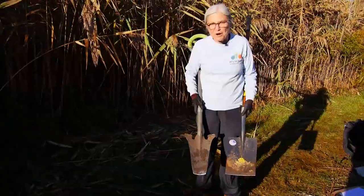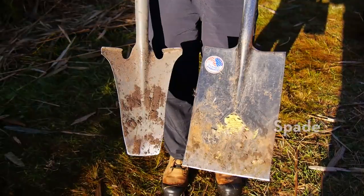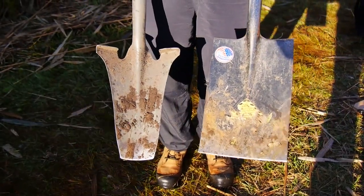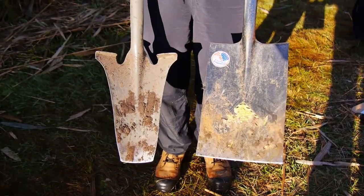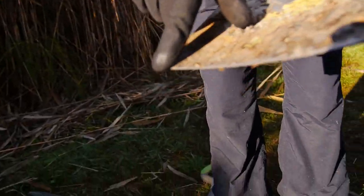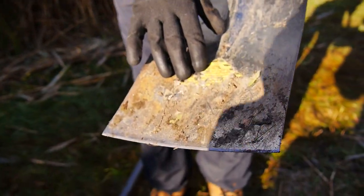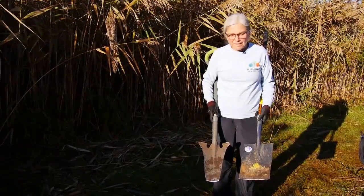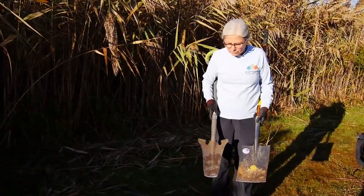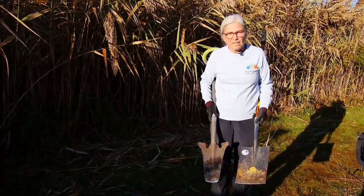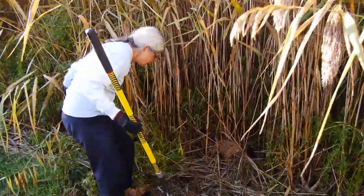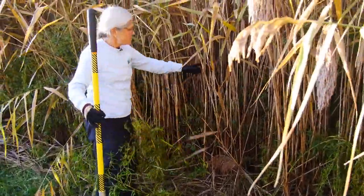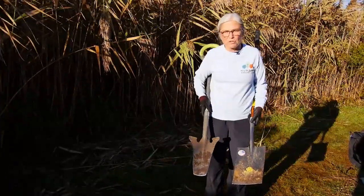These are my tools of choice for removing Phragmites: a spade and a transplanting shovel — though I use it to remove, not transplant, the Phragmites. One thing people may not think about is that I actually sharpen them with a grinder to keep them sharp for cutting the stems. I have the narrower transplanting shovel because eventually, when I get good control, there are other plant species growing among the sparse Phragmites stalks, and I can be selective with the smaller shovel.